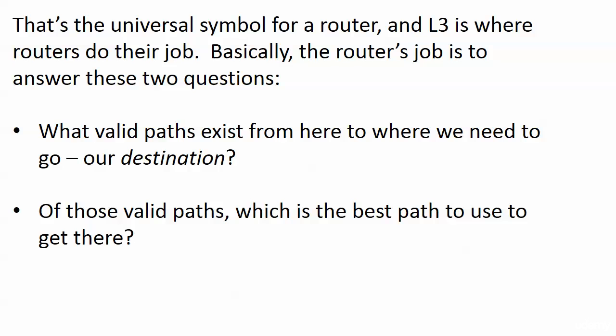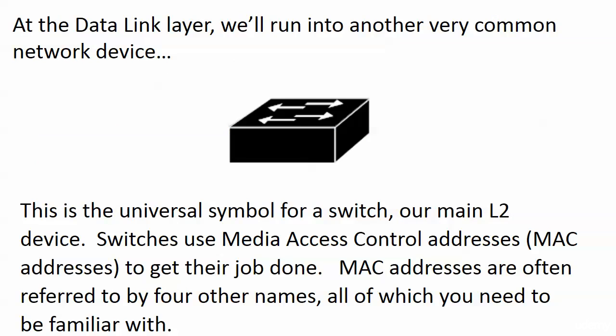It gets a little more complicated than that, as you'd expect, but these are the two fundamental questions a router is answering at layer three. Moving down one more layer to the data link layer, we run into another very common network device you should recognize on sight: a 3D box with four arrows on top, which is the universal symbol for a switch — our main layer two device. Switches use Media Access Control addresses, or MAC addresses, to get their job done.